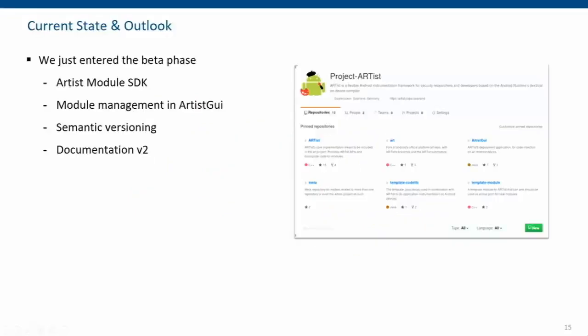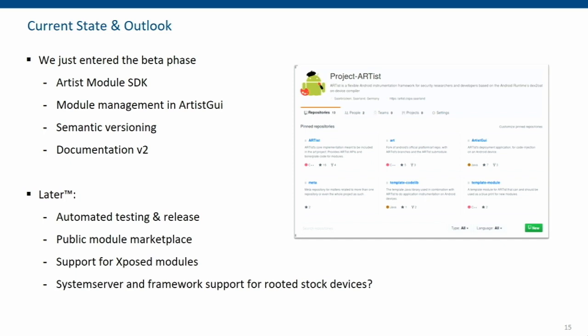As for the current state: we've created the ARTIS module SDK with module management in the ARTIS GUI app, semantic versioning, and documentation — all open source. We want to improve with automated releases and testing, a public module marketplace similar to what Xposed offers, and one of my students is working on a compatibility layer between Xposed and ARTIS so we can reuse Xposed modules — there are around 1,200 of them currently — to bootstrap ARTIS. We also want to implement system server and framework support so we can instrument them from any rooted device.